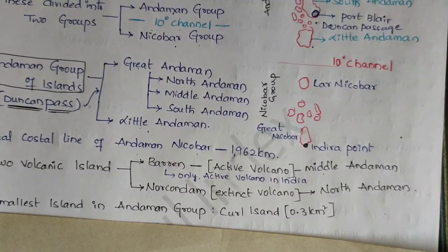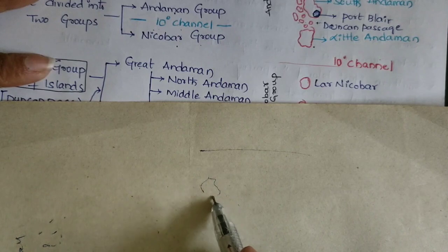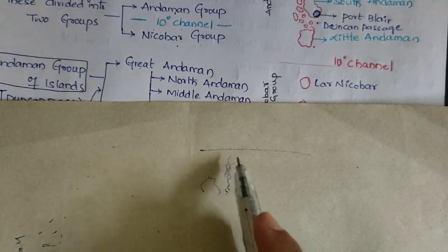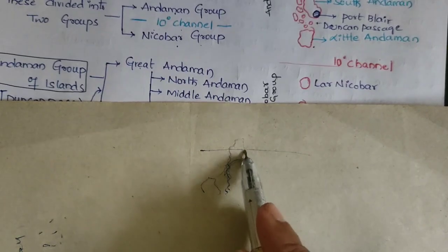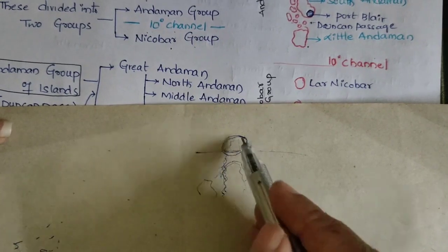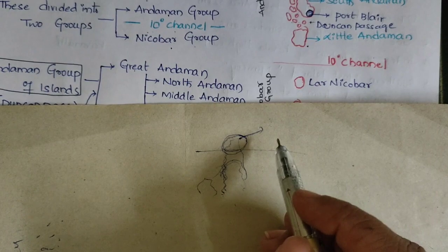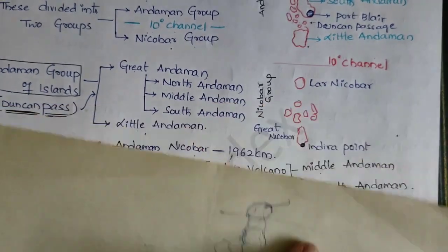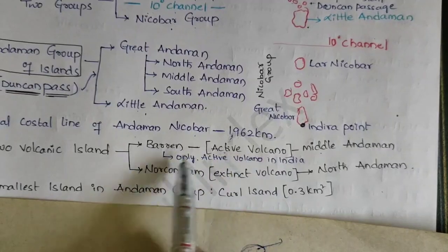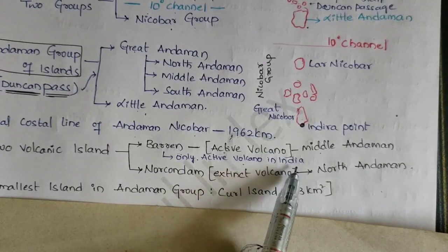In Andaman and Nicobar islands, there are many volcanic islands. Volcanic islands are formed by volcanic eruptions at the surface. In Andaman and Nicobar, most of the islands are volcanic islands. An important example — for an active volcano — is Barren Island. It is the only active volcano island in India.